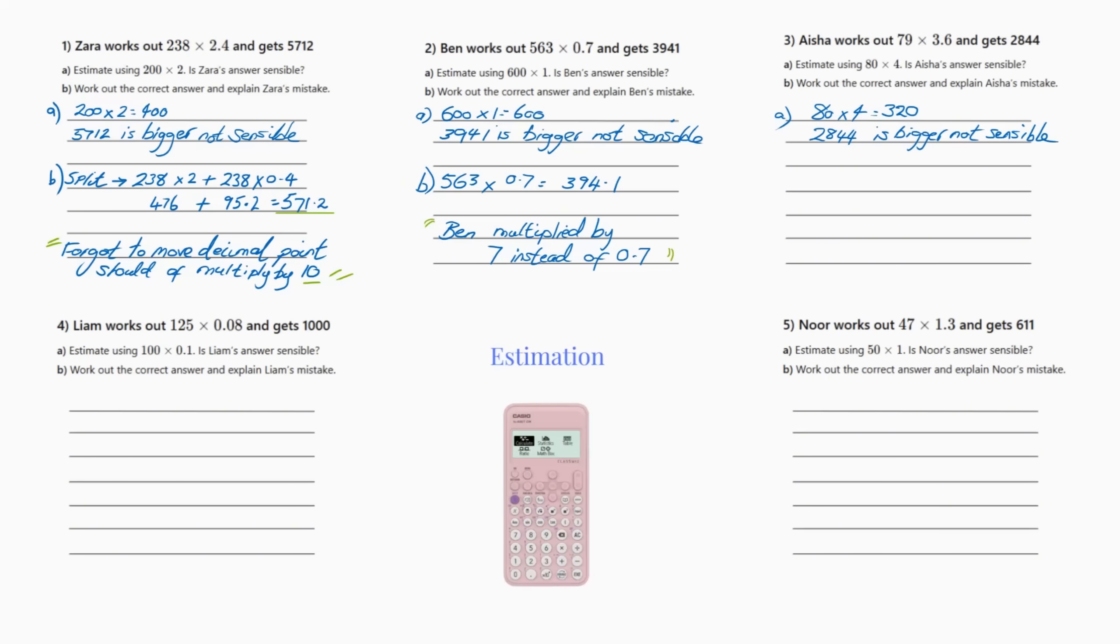So there you can see that 200 times 2 equals 400. So 5712 is bigger and is not a sensible answer. So we have marked off question A. Then question B is to work out the correct answer and explain Zara's mistake. So all I've done here, it's a bit long-winded but it's just to show you what I've done.